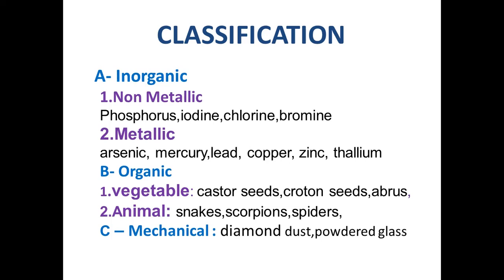The second main group is organic irritant poisons, which are again divided into two: vegetable irritants and animal irritants. Examples of vegetable irritants are castor oil seeds, croton oil seeds, and Abrus precatorius. Animal irritants examples are snakes, scorpions, and spiders. The third main group is mechanical irritant poisons — examples are diamond dust and powdered glass.